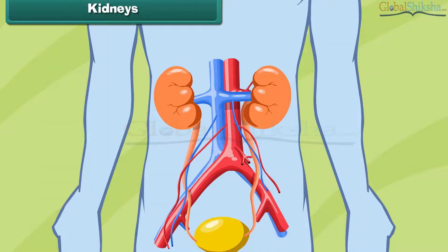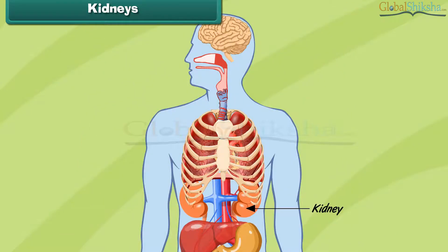Kidneys: The kidneys are organs that keep our blood free from unwanted substances called wastes. The human body has a pair of kidneys located just below the rib cage, one on either side of the body. The kidneys remove wastes from the blood and various body parts and thus keep us healthy.